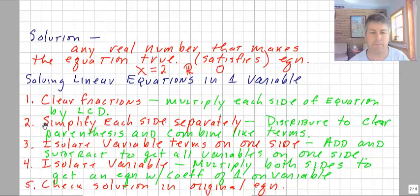And then finally, we're going to isolate our variable. Might have to multiply both sides to get an equation with a coefficient of one on the variable. So we don't want 5x equals 15, we want 1x equals 3. And then finally, you check your solution in the original equation. Just make sure your answer makes sense.